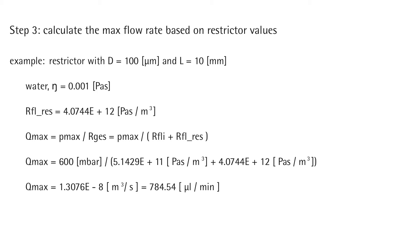The fluidic resistance of the restrictor is dependent on the power of 4 of its diameter, but only linearly to the length. The diameter is the most significant parameter to choose. With the internal resistance of the pump, the viscosity of the liquid, and the dimensions of the restrictor, it is possible to find the resulting maximum flow rate.